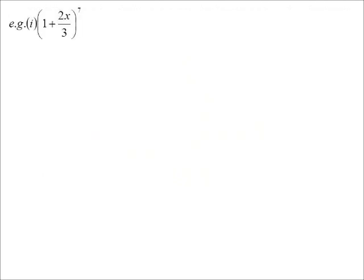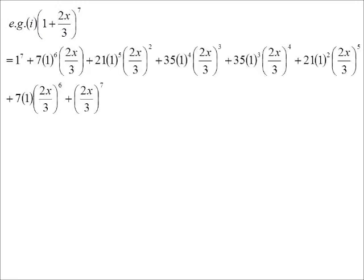So, (1+2x/3) to the power of 7. We don't have to go (1+2x/3) times (1+2x/3) times (1+2x/3) and do all that work. We can just go, oh, that's easy. Because we know those coefficients in the row go 1, 7, 21, 35, 35, 21, 7, 1. And then the powers of 1 go down by 1. Doesn't matter with 1, though.